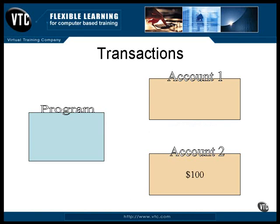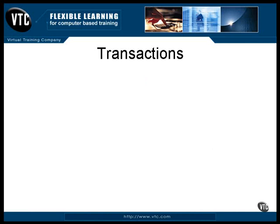Now, this is a very simple example, but you can imagine transactions that consist of several operations. Unless every one of them completes successfully, none of them are completed, and everything is left in its original state. You can see where this would be critical in a multi-tiered and distributed system. Enterprise Java Beans can be used to implement a complicated transaction.